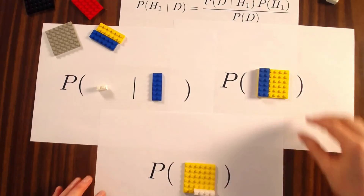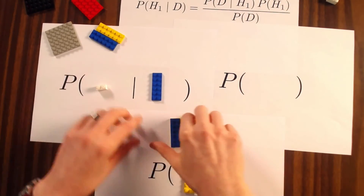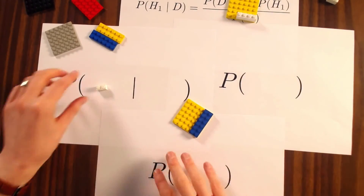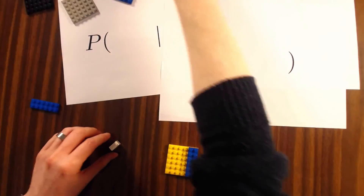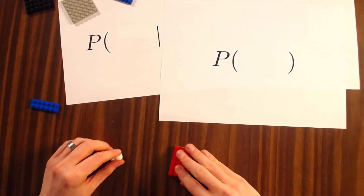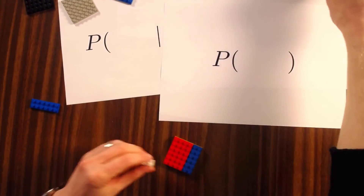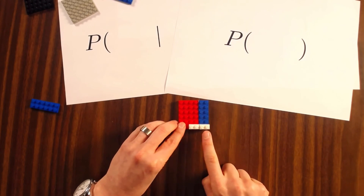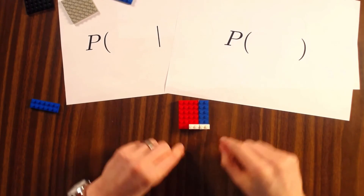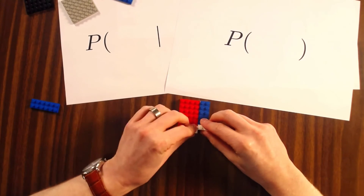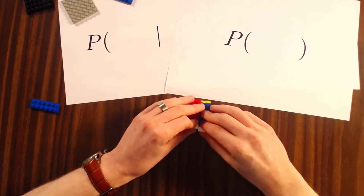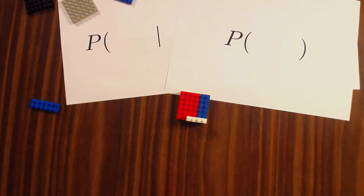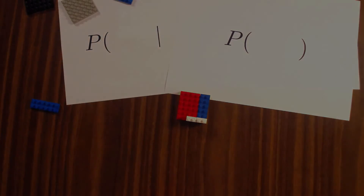And that is not surprising because we had already seen in our data that if we were to randomly select a white peg, then the probability that one or the other hypothesis is below it is exactly 0.5.